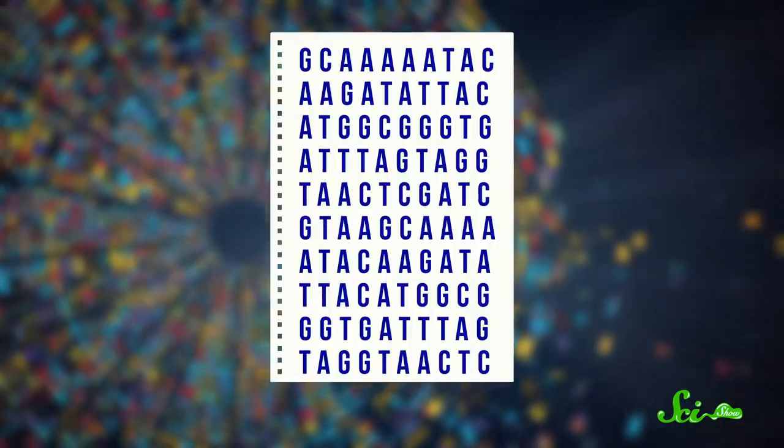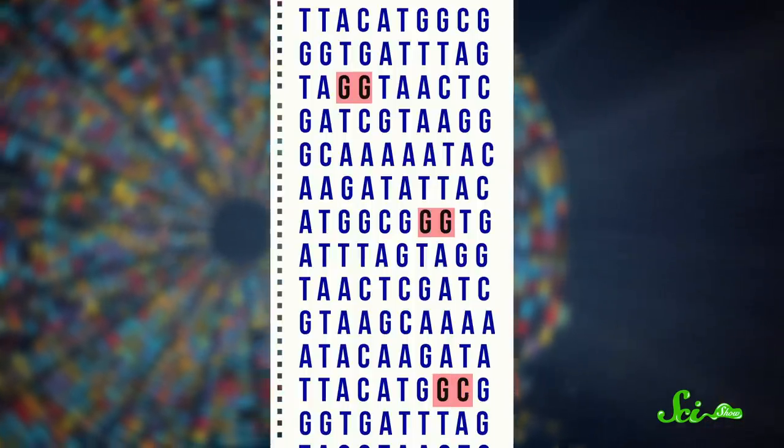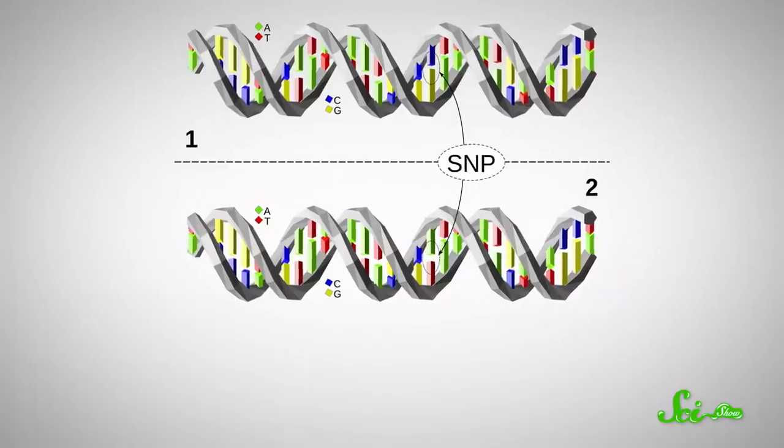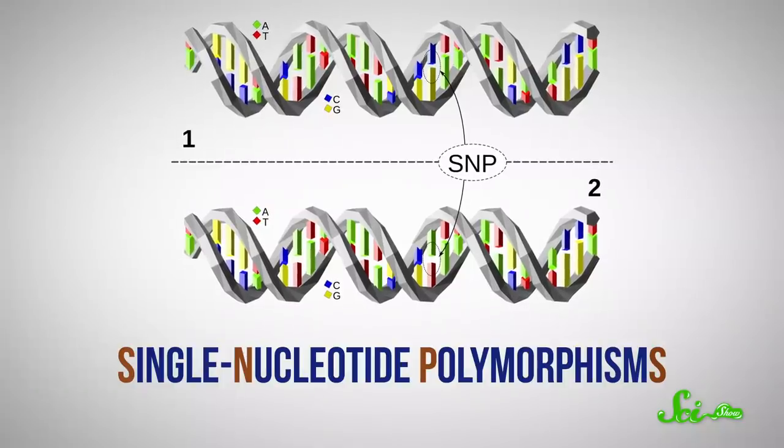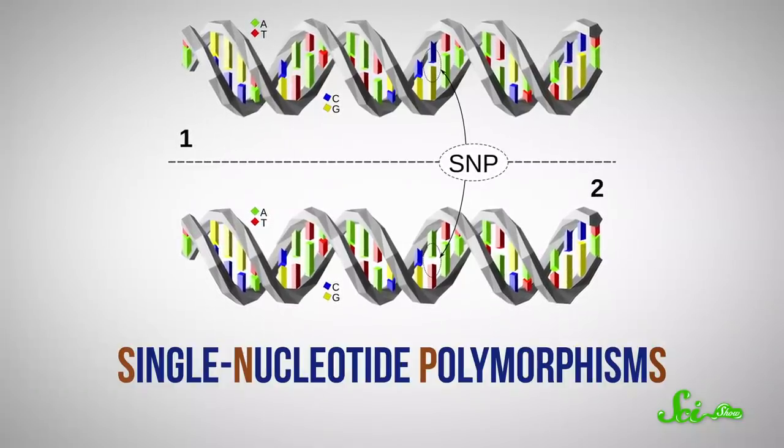These studies examine genetic data from a huge number of people. Though usually, there's no need to sequence their entire genome. Instead, researchers look for genetic variants called single-nucleotide polymorphisms, or SNPs.